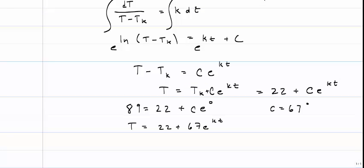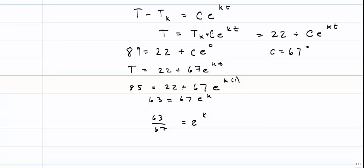Now what we're going to use is our second data point to find the K. What I'll need to do to find K in this case is take the natural log of both sides, and I find that K is equal to negative 0.0616.